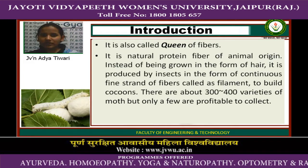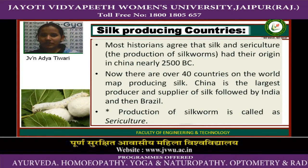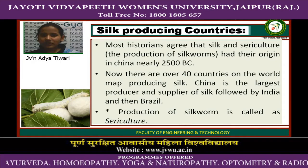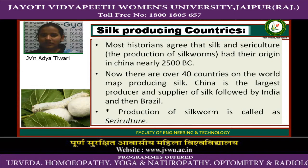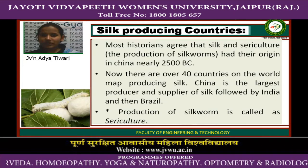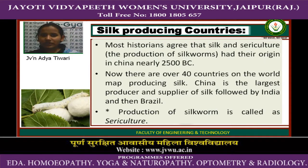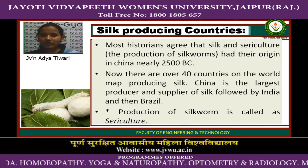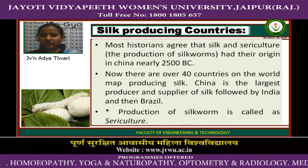Only a few are profitable to collect. Next is silk producing countries. Most historians agree that silk and sericulture — the production of silk — had their origin in China, nearly 2500 BC. Now there are over 40 countries on the world map producing silk. China is the largest producer and supplier of silk, followed by India and Brazil.